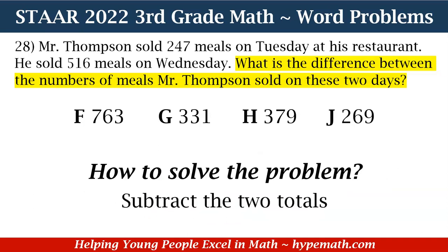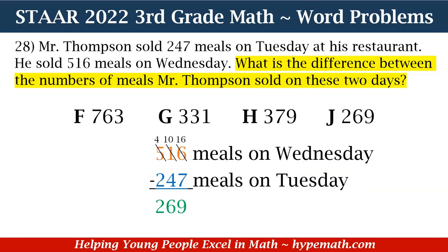How do we solve this problem? We need to subtract the two totals. We have 516 minus 247. Starting at the ones place, we see that 7 cannot go into 6, so we need to borrow from the tens place. We add that 1 and the 6 becomes 16. Now I can subtract: 16 minus 7 is equal to 9.